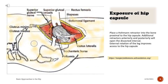Exposure of hip capsule. Place a Hohmann retractor into the bone proximal to the hip capsule. Additional retractors anteriorly and posteriorly will open the dissected interval. External rotation of the leg improves access to the hip capsule.